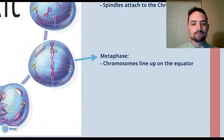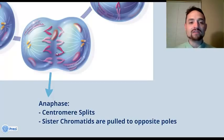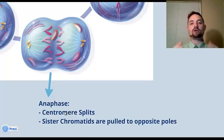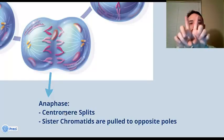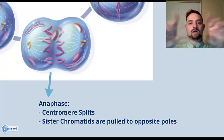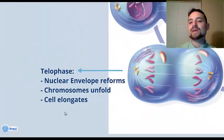Then you have anaphase. In anaphase, the centromere splits, and the sister chromatids are pulled to opposite poles. So that chromosome, remember, was made up of two sister chromatids that were identical to each other, connected at a centromere point. They will split now and be pulled to opposite poles of the cell.